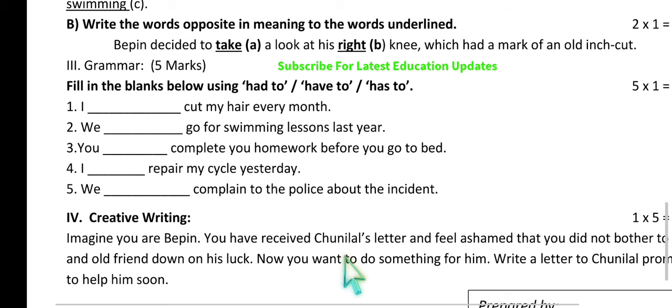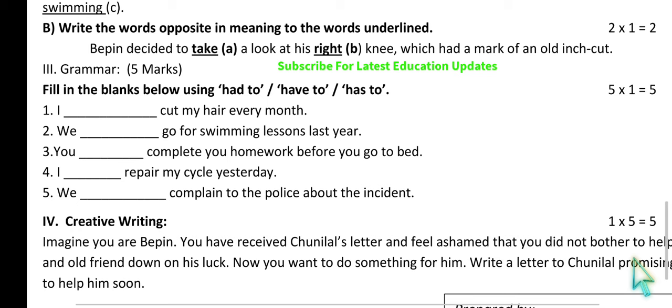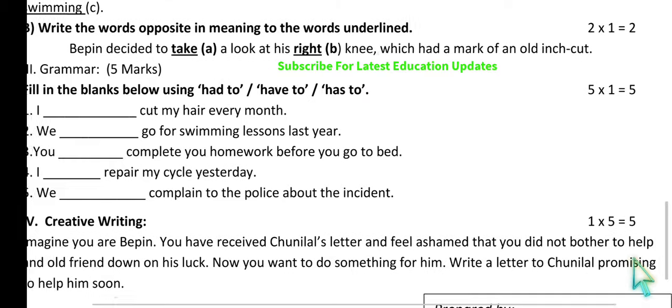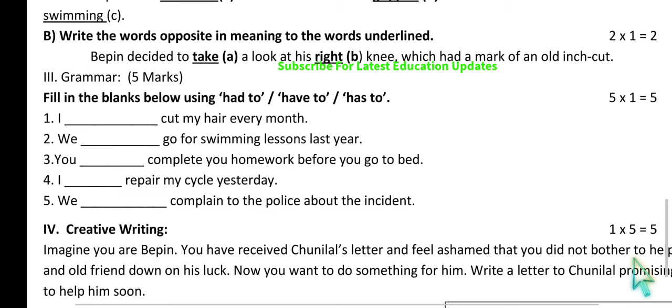The creative writing task reads: imagine you are Bipin. You have received Chunilal's letter and feel ashamed that you didn't bother to help an old friend down on his luck. Now you want to do something for him. Write a letter to Chunilal promising to help him soon — convey your feelings that you will definitely help him. Follow the letter format including the salutation, address, and body of the letter to score maximum marks.